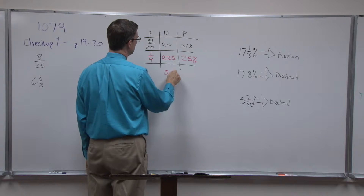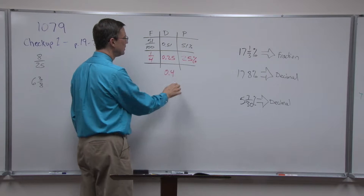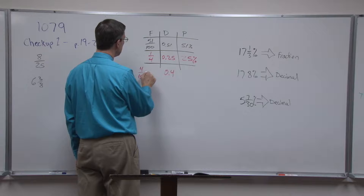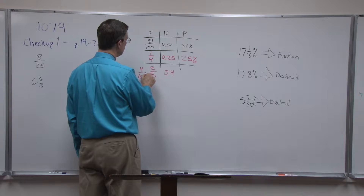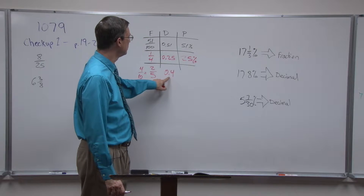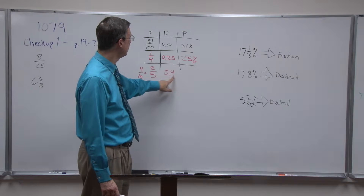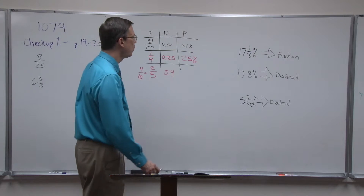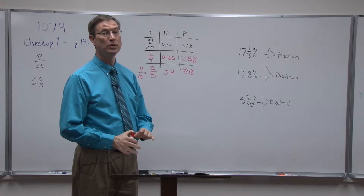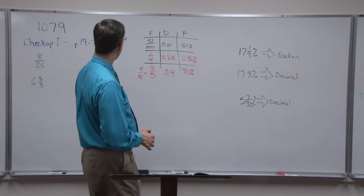Let's try starting with the decimal 0.4 and turning it into a fraction. We recognize that this is four-tenths, so we write 4/10, which reduces to 2/5. Going from decimal to percent, same pattern: move the decimal twice — always twice. Even though there's only one decimal place, the answer is not 4%; move it twice and get 40%. Math is great because some rules always work, and with percents to decimals it's always move the decimal twice.